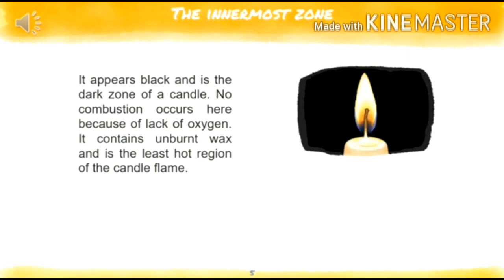The innermost zone appears black and is the dark zone of a candle flame. No combustion occurs here because of lack of oxygen. It contains unburnt wax and is the least hot region of the candle flame.